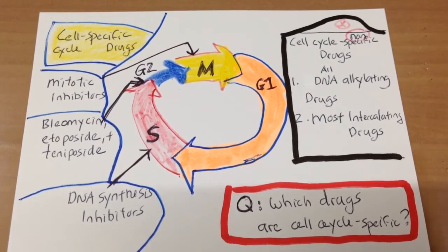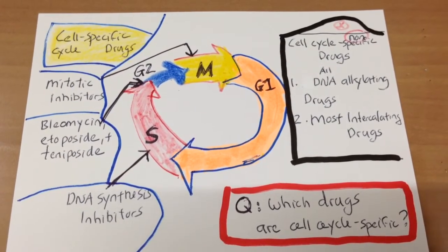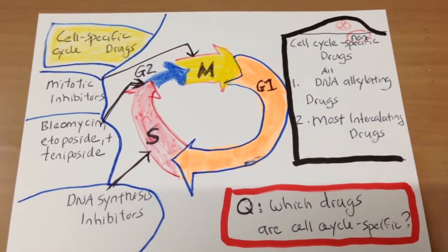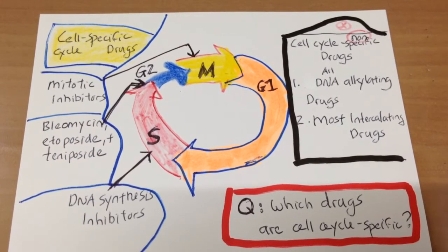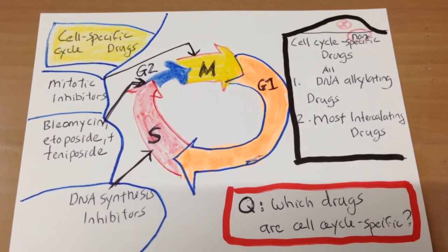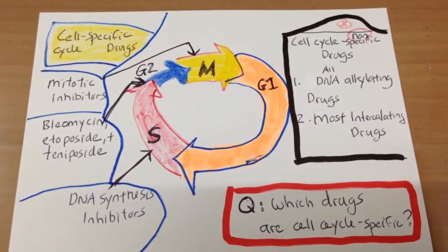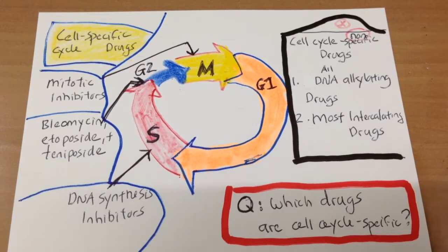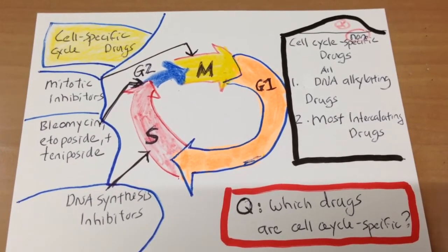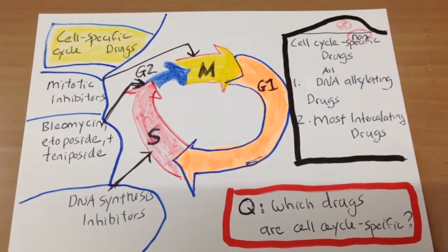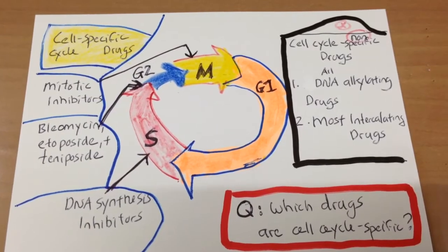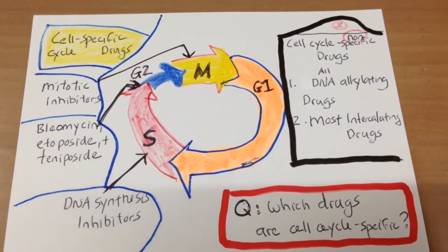Then there is the first growth stage, and then there is the synthesis stage where DNA is made, and then there is the second growth stage. So we have those that are cell cycle specific drugs and those that are non-specific.